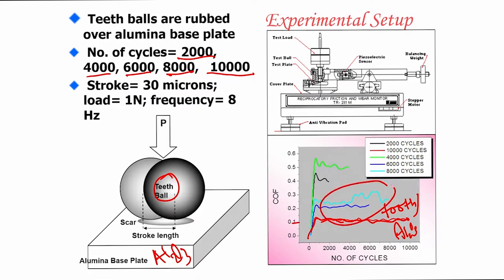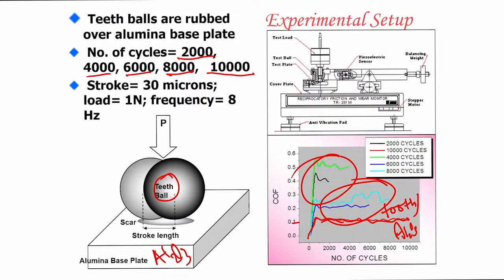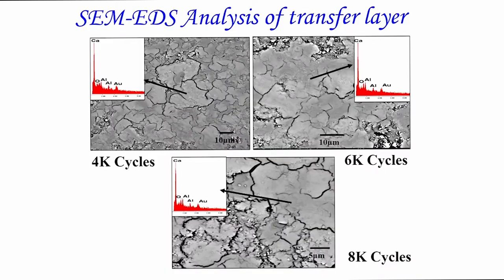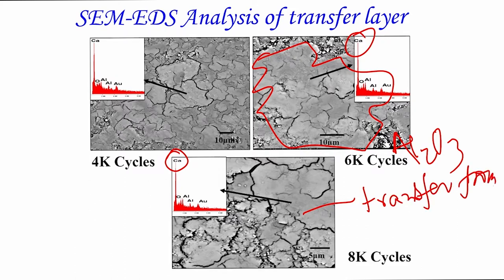At larger numbers of cycles there is some variation, depending on teeth taken from different locations and patients. Essentially, the frictional properties indicate it is possible to measure a low coefficient of friction of around 0.1. These tests were also done in artificial saliva solution to simulate the maxillofacial environment. Looking at the transfer layer formed on the alumina surface, there is a very strong peak of calcium — so the transfer film on the flat alumina surface originates from the tooth, meaning the tooth ball is fretted and worn away, transferring material to the alumina surface.